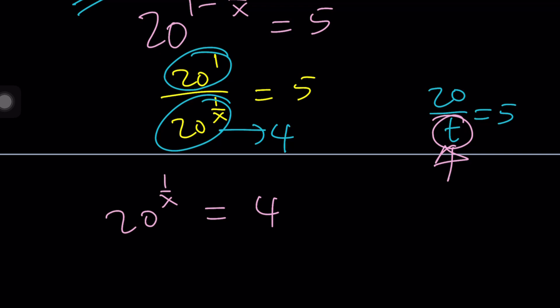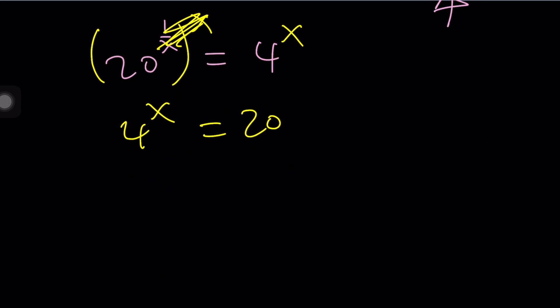So, now we got 20 to the power of 1 over x equals 4. At this point, we can do a super hocus-pocus mathematical operation. Raise both sides to the power of x. x is going to cancel out. And mysteriously, you're going to find 4 to the power of x equals 20. Wait a minute. I do need 2 to the power of x. No worries. Square root both sides, and you'll get it. So, 2 to the power of x, because you just square root the base, and that's going to give you 2 root 5 as before.